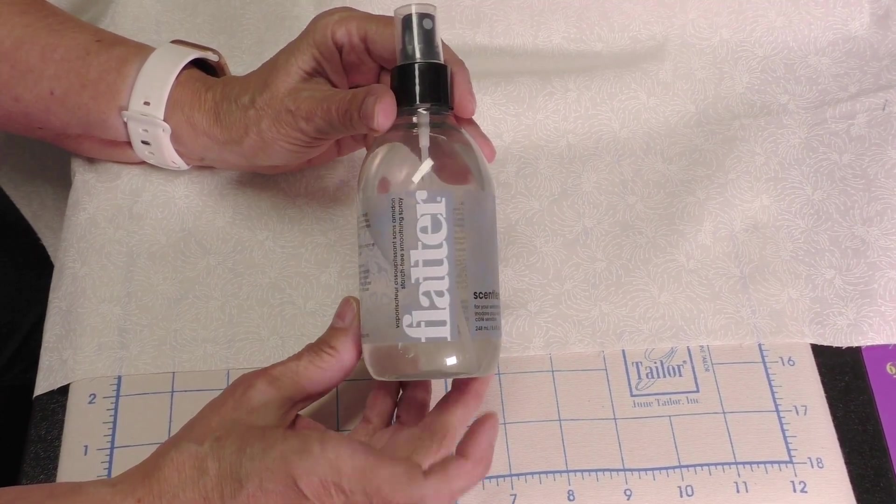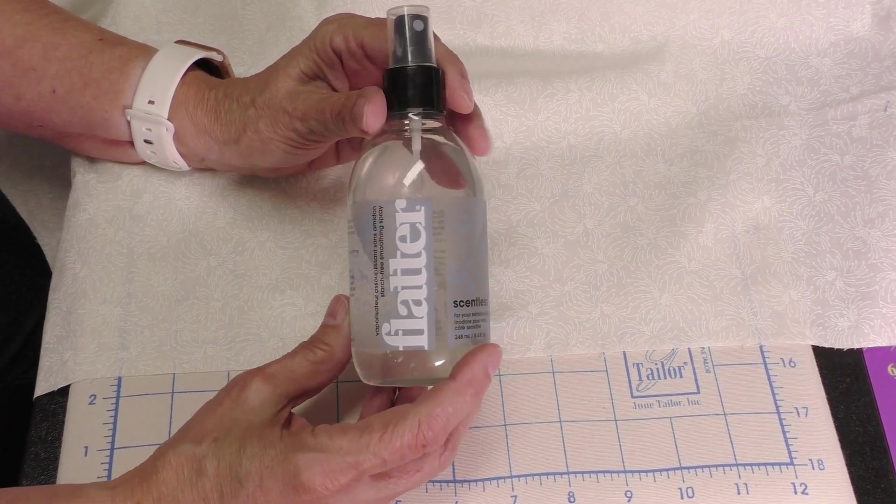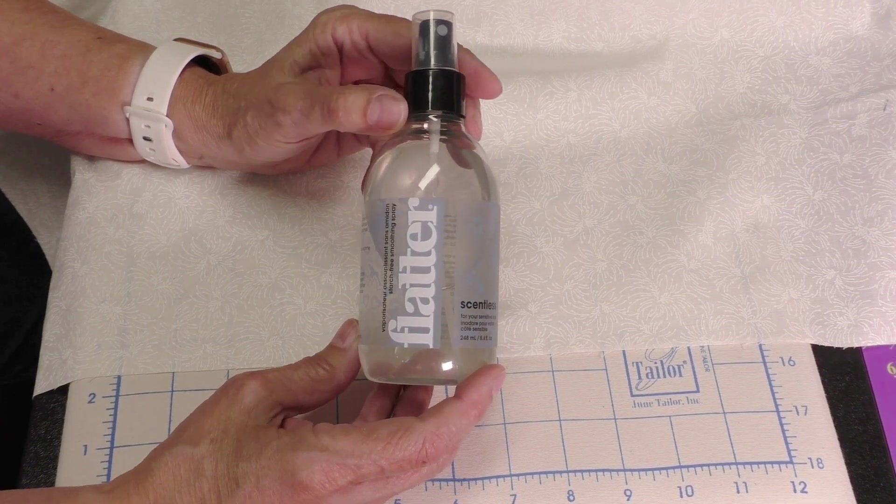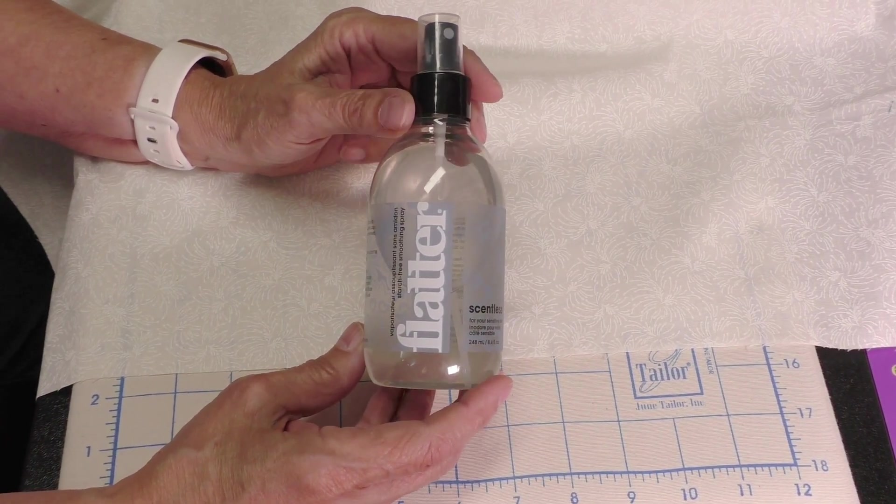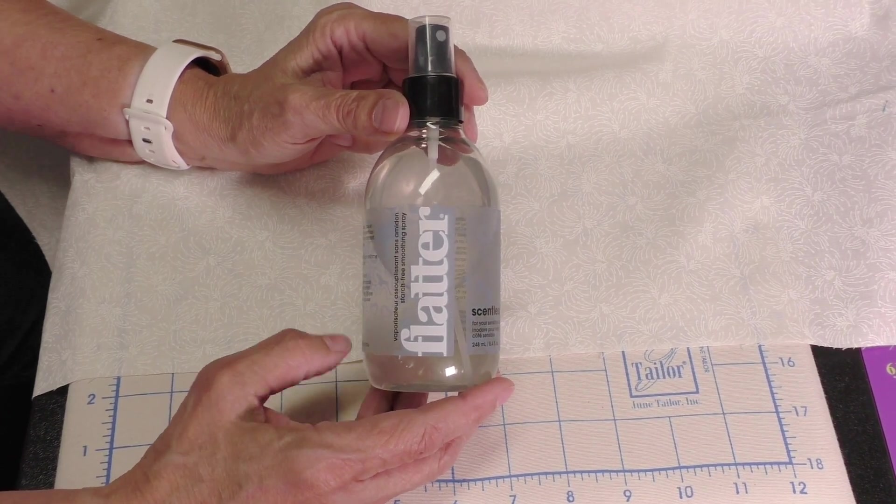I think I would use it on those hard to remove folds, but I'm not sure I would use it all over just because it is a small bottle and it's expensive. So I probably would only use it on places where I was having trouble getting the wrinkles out, and then use either steam or my other pressing solutions on the other folds and wrinkles on the fabrics.